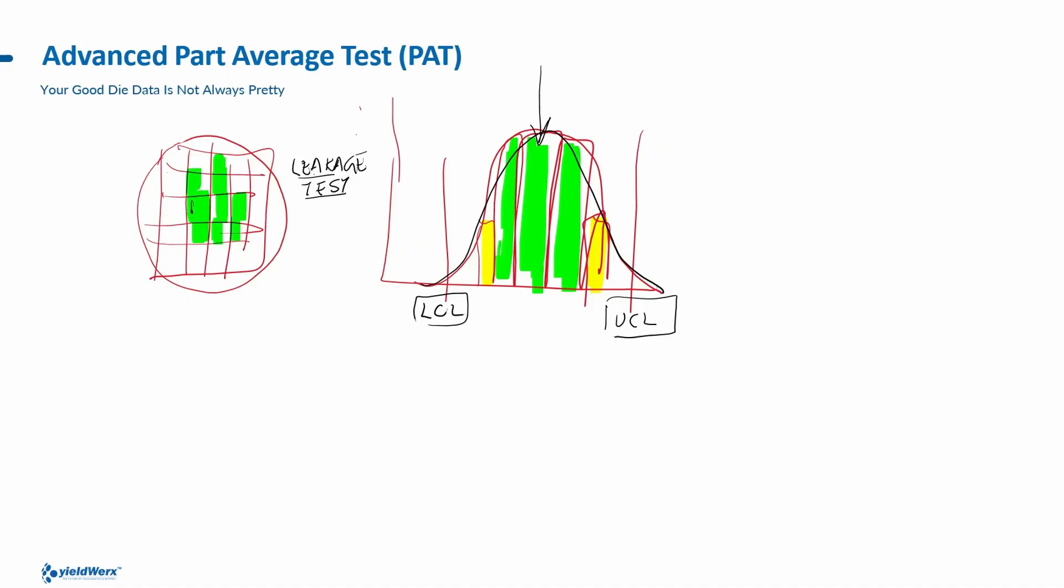There are process issues that can occur. There could be theoretically radical issues, design issues, maybe even assembly and test issues, where your data is not going to fit into a normal curve like this. So what we're doing at Advanced PAT is we actually look at the signature of the data, and from looking at the signature of the data, we determine what different rules to apply to the data to eliminate those good die.